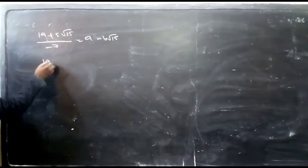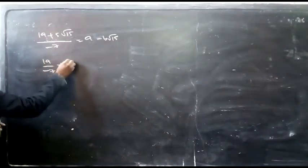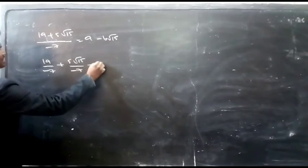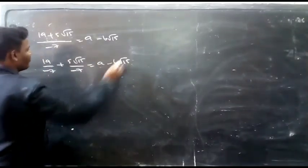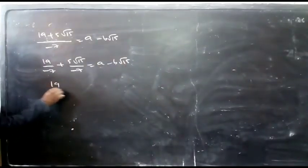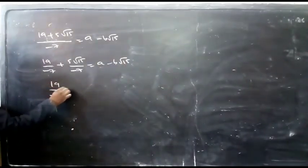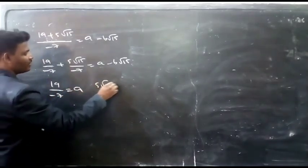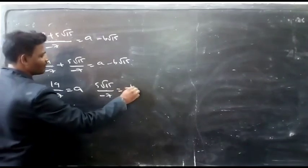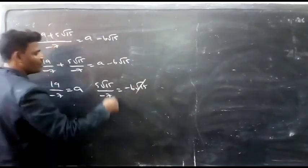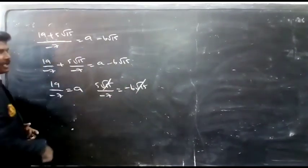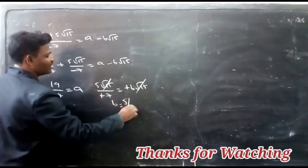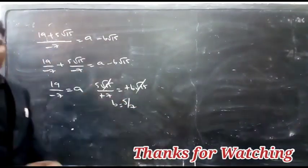Comparing: 19/−7 = a, so a = −19/7. And 5√15/−7 = −b√15, so √15 cancels and the negatives cancel, giving b = 5/7.